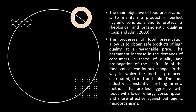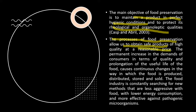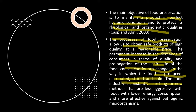The main objective of food preservation is to maintain a product in perfect hygienic conditions and to protect its rheological and organoleptic qualities. This process allows us to obtain safe products of high quality at a reasonable price. The permanent increase in consumer demands in terms of quality and prolongation of the useful life of food causes continuous changes in the way food is produced, distributed, stored, and sold. The food industry is constantly searching for new methods that are less aggressive with food, lower in energy consumption, and more effective against pathogenic microorganisms.